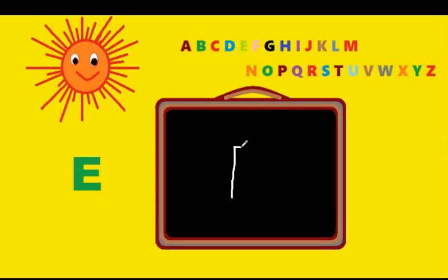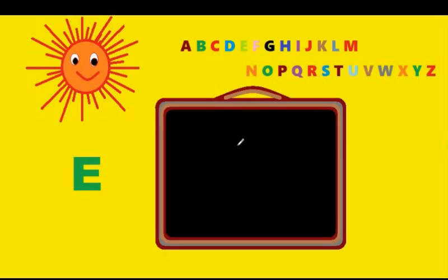Next letter is E. You have to come down the tree, across the street, across the street, and again across the street. You have to make a standing line, a first sleeping line, a second sleeping line, and a third sleeping line. That's E. E is for elephant.